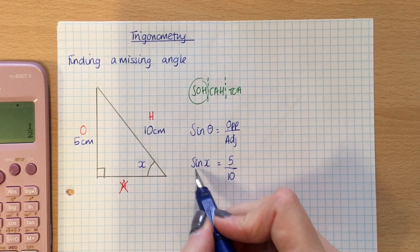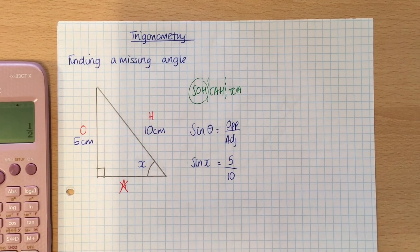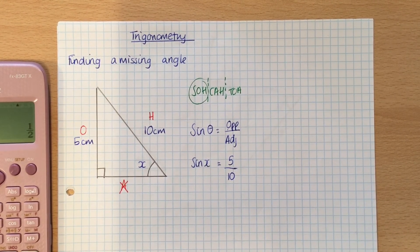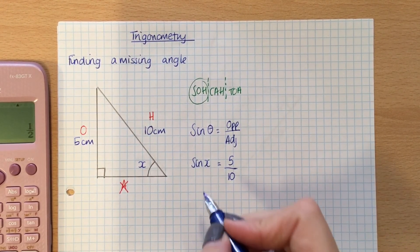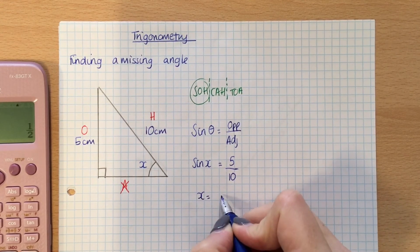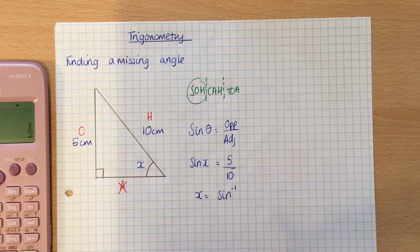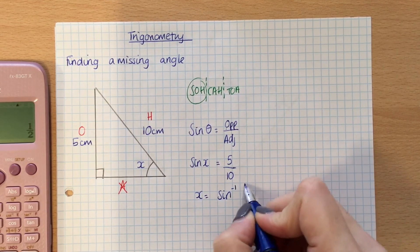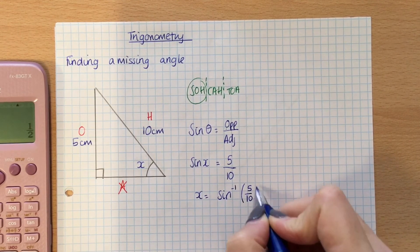So, to get rid of sine here to get it on its own, I have to multiply by sine to the minus 1, when that cancels them out. So, X equals, so I've got rid of that, and I take it to the other side, and it becomes the inverse of 5 divided by 10.